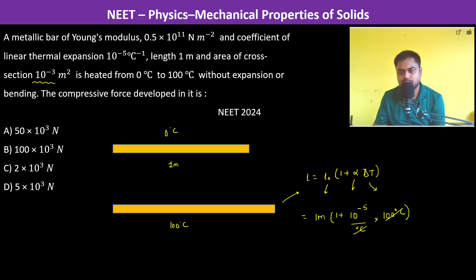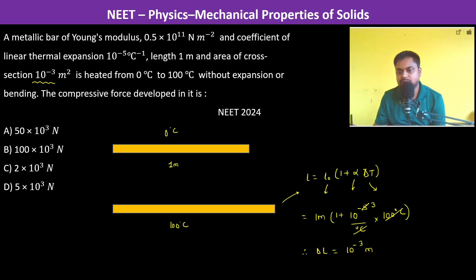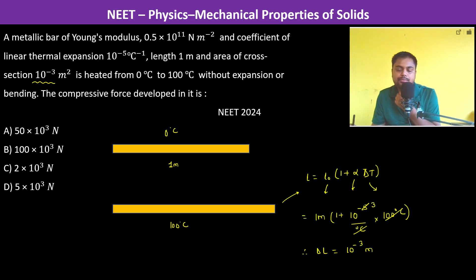This gives 10⁻³, so therefore ΔL = 10⁻³ meters.